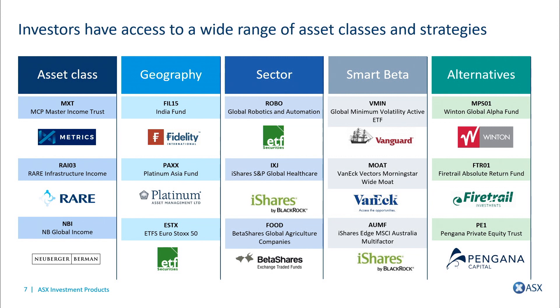Across geography lines, the Fidelity India Fund and the Fidelity Emerging Markets Fund have enabled investors to diversify into high-growth areas of the globe. By sector, you can play out almost any particular theme as an investor — the ETF Securities Global Robotics Fund is a great example of that. The emergence of smart beta products on the ASX has also been a great trend, with the Vanguard Global Minimum Volatility Active ETF being an example.